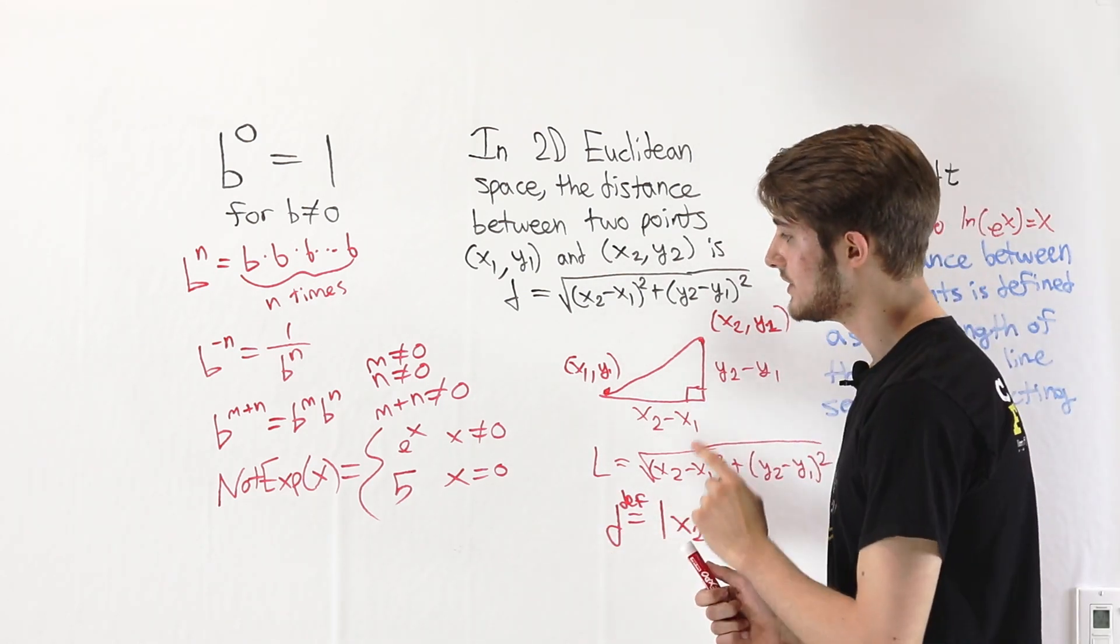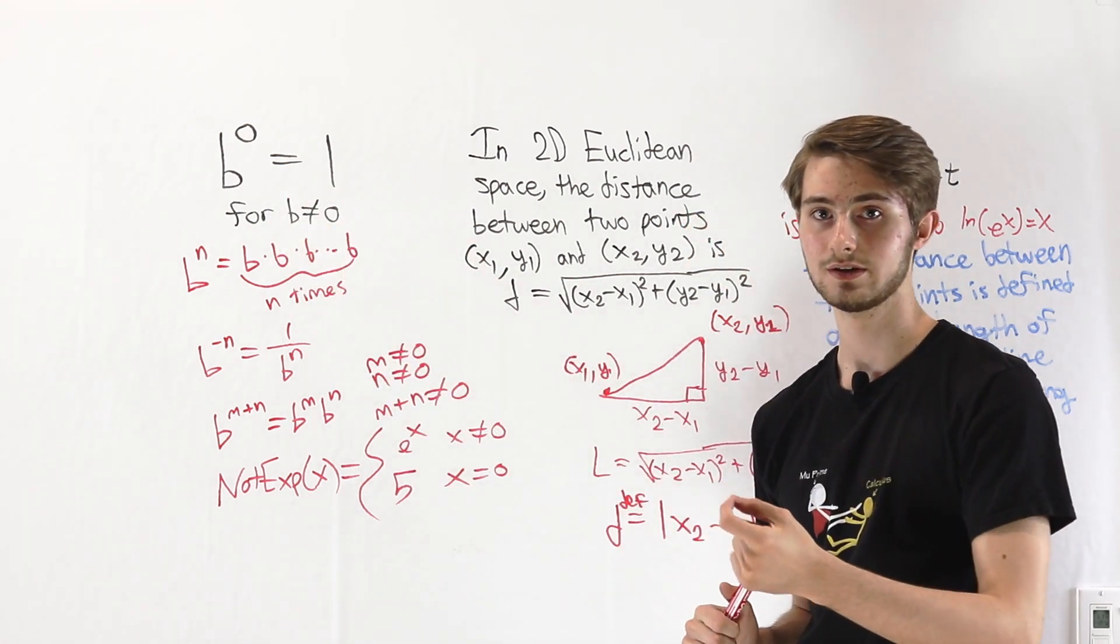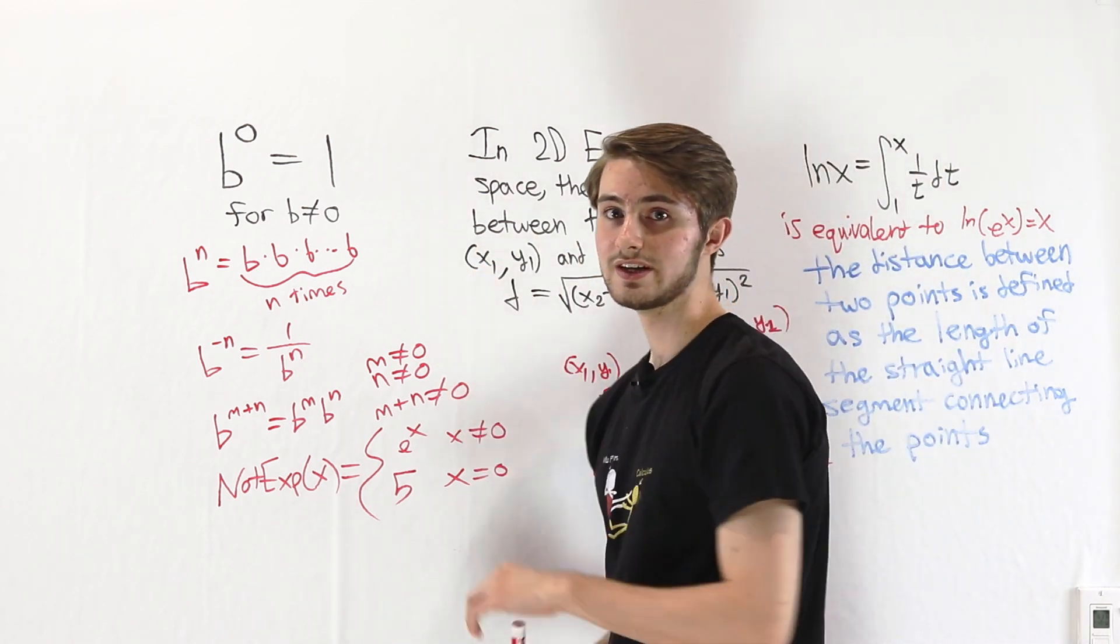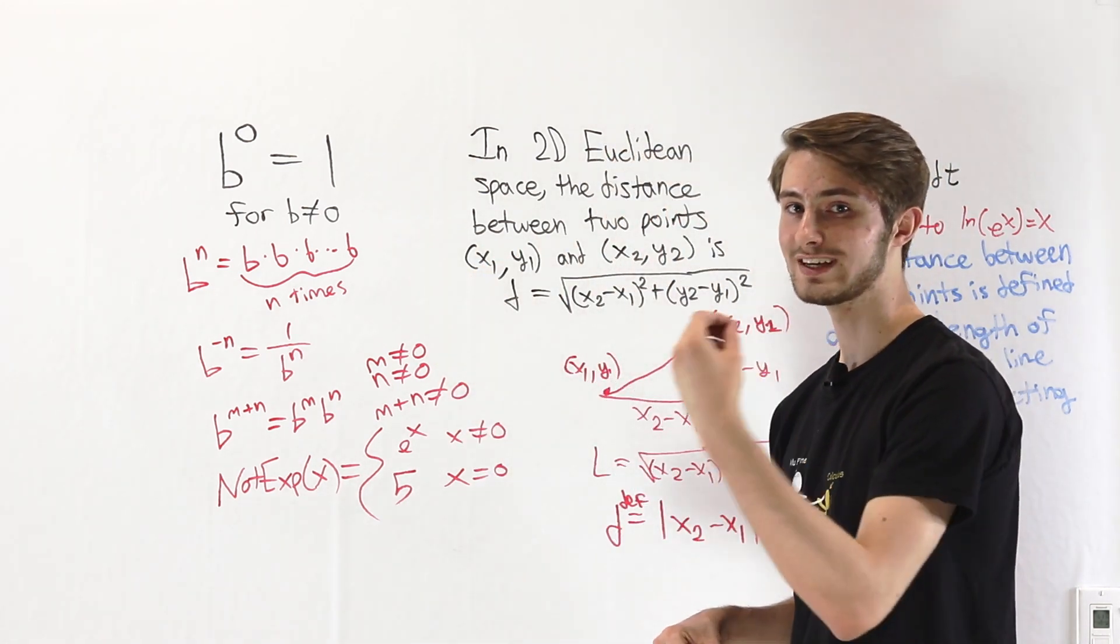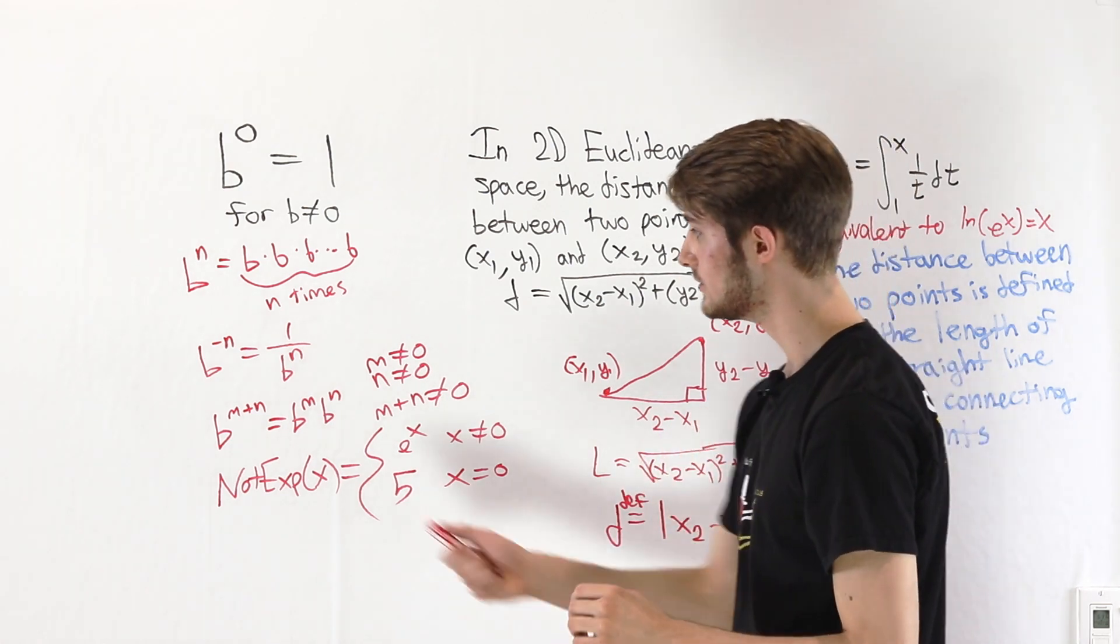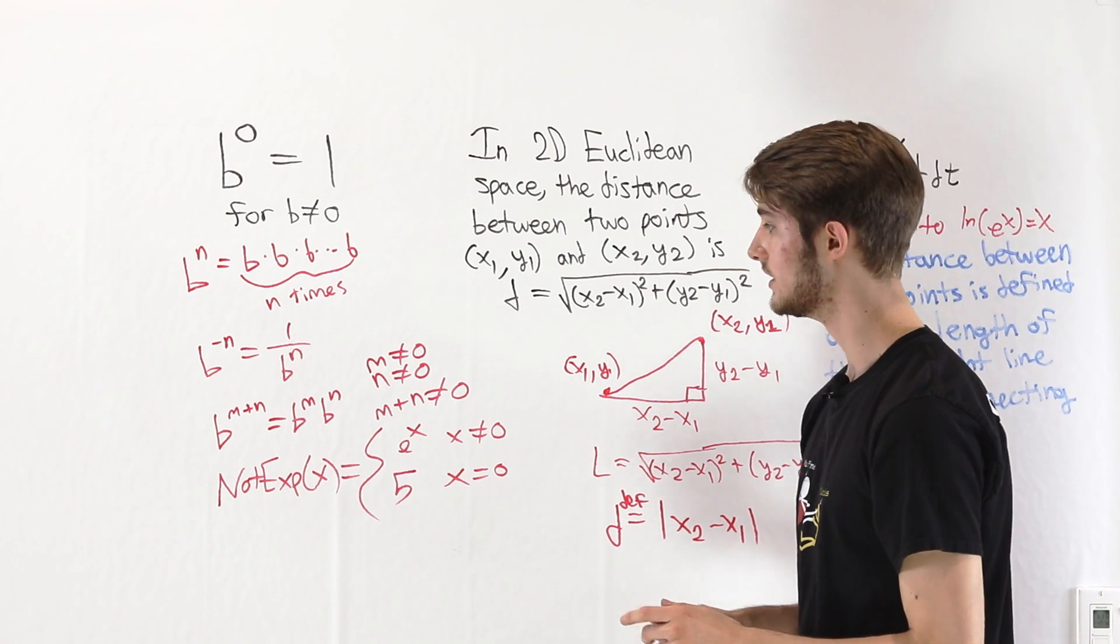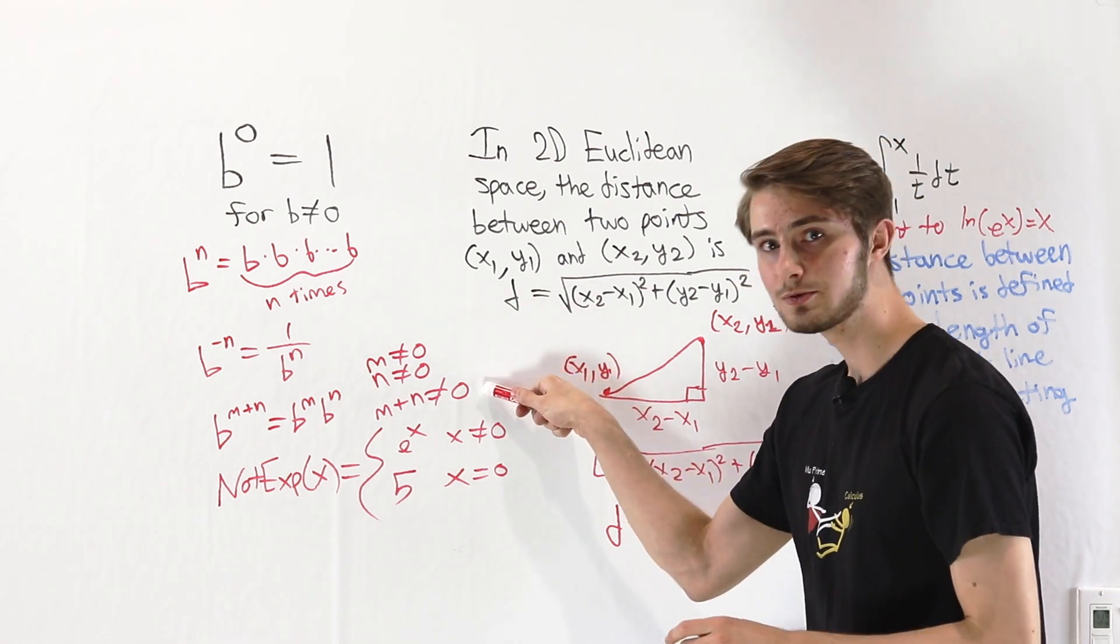However, there is a way that we can make b to the 0 equal 1 be a theorem. See, the way that b to the 0 is often introduced is as a natural extension of the normal rules of exponents. If we know b to the (m plus n) equals b to the m times b to the n, for all the cases except when we have 0,